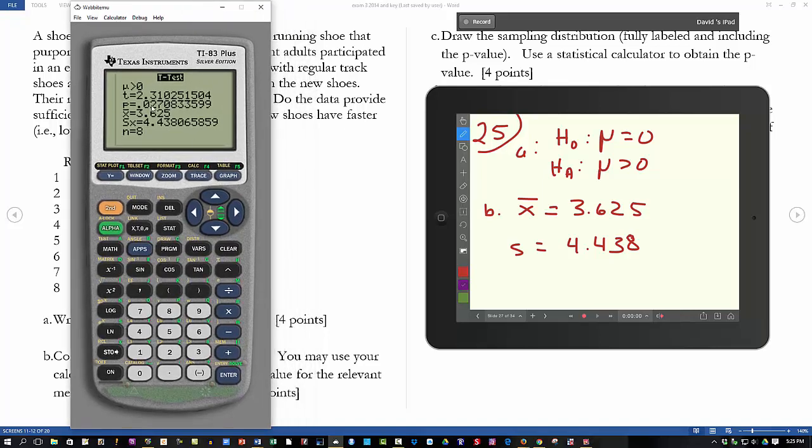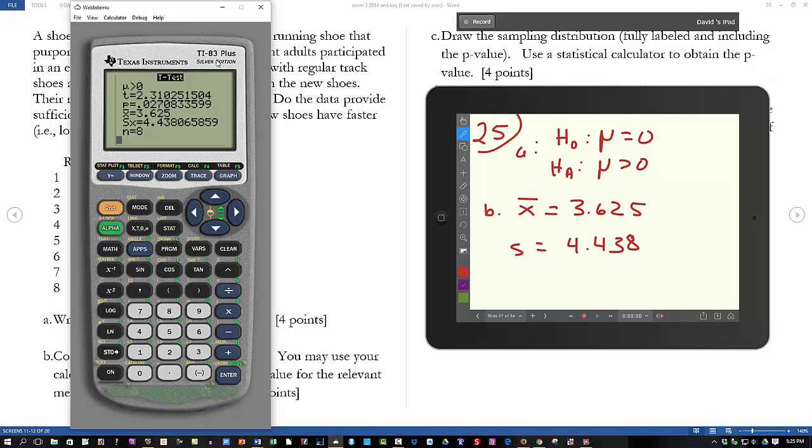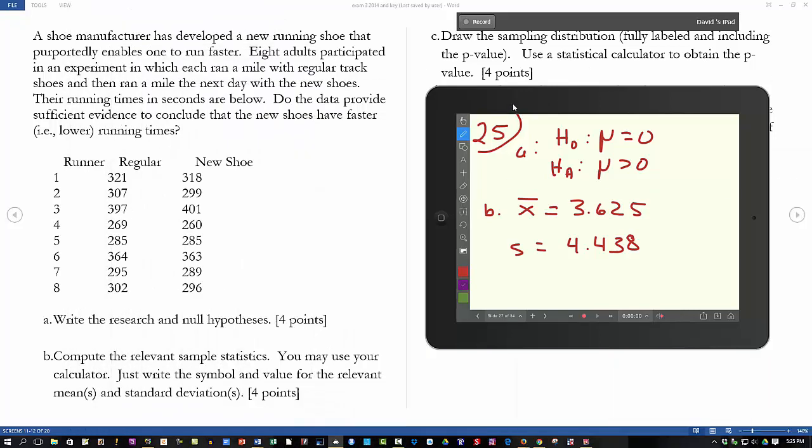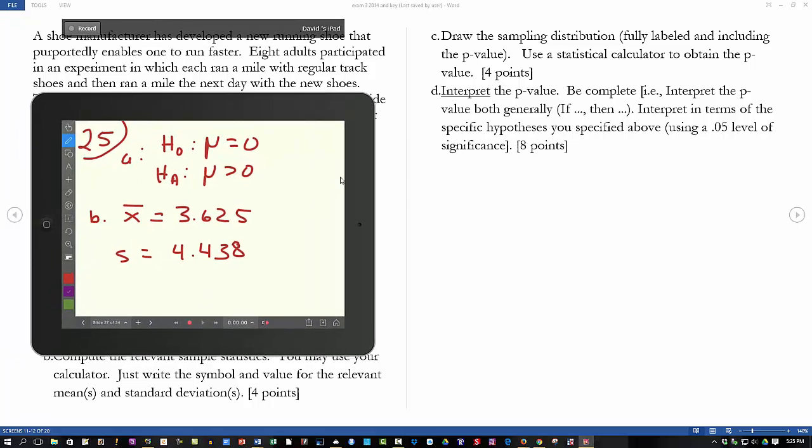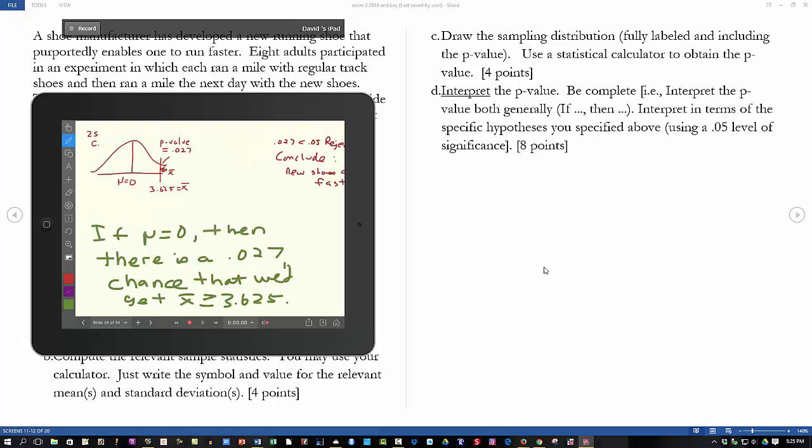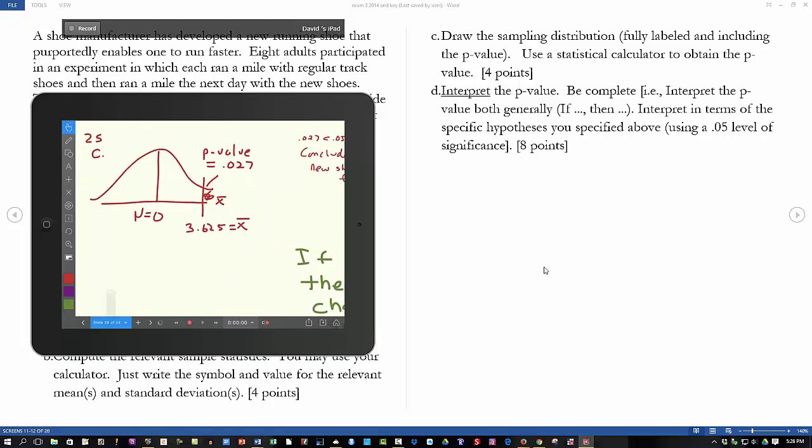The p-value there, let's go ahead and make note that that is 0.027. I'll move this out of the way. Over here, we want to draw the sampling distribution fully labeled, including the p-value. And there that is.